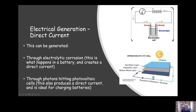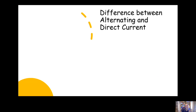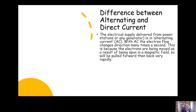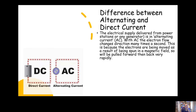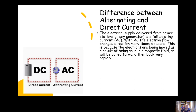You can also generate direct current through photovoltaic cells. As the photons hit the photovoltaic panel, it causes the electrons to move, which can then generate a direct current.